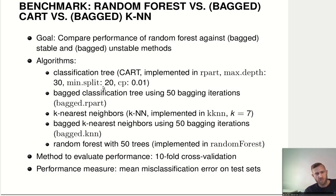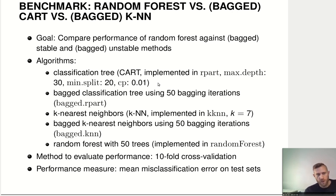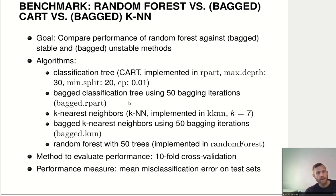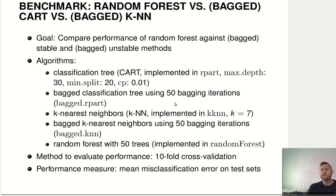For a split to be attempted, we have to have at least 20 observations in a node, and we are going to prune that tree with a complexity parameter of 0.01. We can also do bagging for this, so we'll take a classification tree with these hyperparameters and do 50 bagging iterations, using a bagged tree.